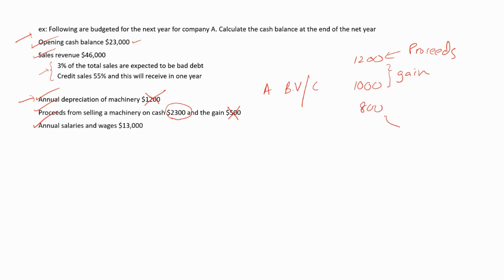Now again, this is the proceeds. And you can see there is a difference between these two values — this is a loss. We consider the proceeds for the cash budget, but we do not consider gains or losses under the cash budget because these are non-cash items. They have finally given us the annual salaries and wages.